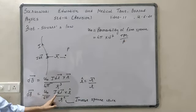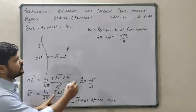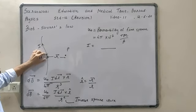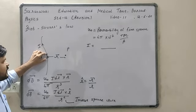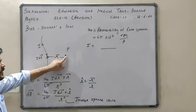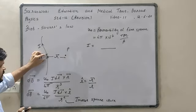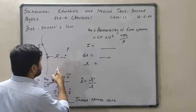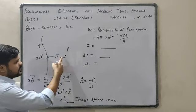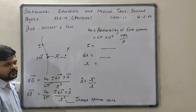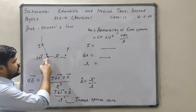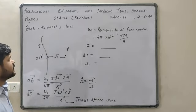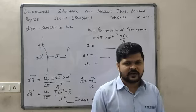Next, I is the current flowing from the wire. IDL is the small element of current that we have considered, due to which we are finding the magnetic field at point P. DL is the small element. R is the displacement vector of point P with respect to the element DL. At point P we will find out the magnetic field. So these are all the terms covered in Biot-Savart law.